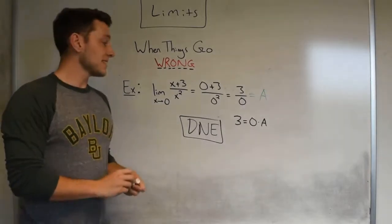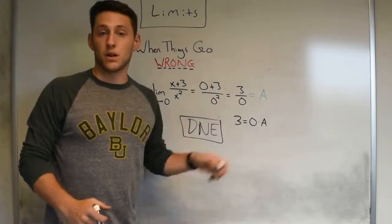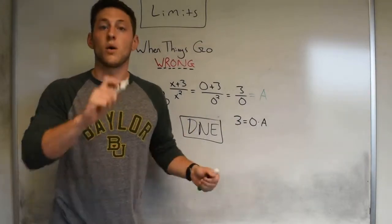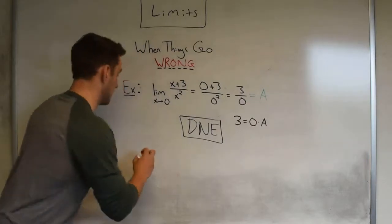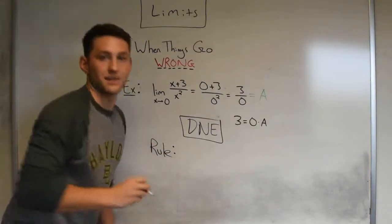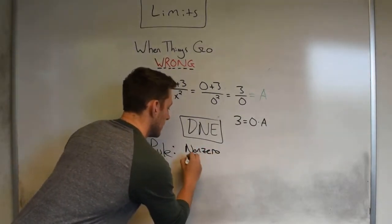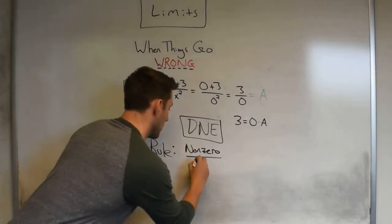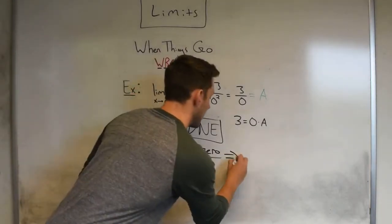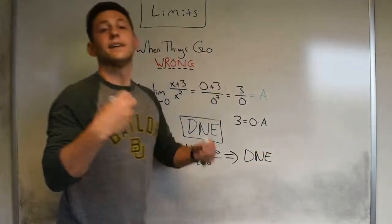When you have a non-zero number divided by zero, that's going to correlate with a vertical asymptote on the graph. So this is our first general rule: non-zero divided by zero means that your answer is 'does not exist.'